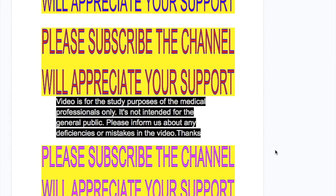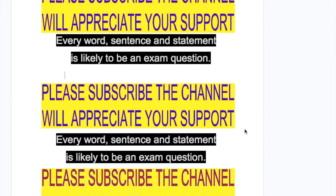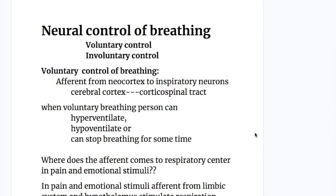In this video we'll discuss neural control of respiration, voluntary and involuntary control of respiration, the respiratory centers, inspiratory and expiratory centers and their connections, chemoreceptors and chemical reactions. The neural control of breathing is done by voluntary control and involuntary control.